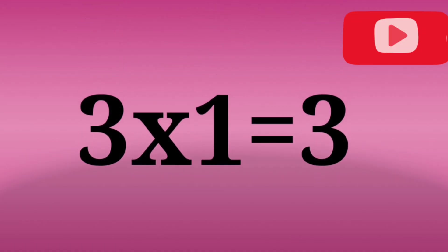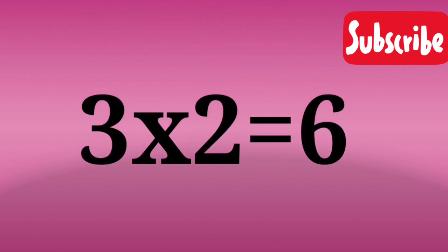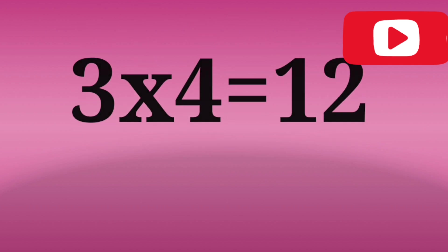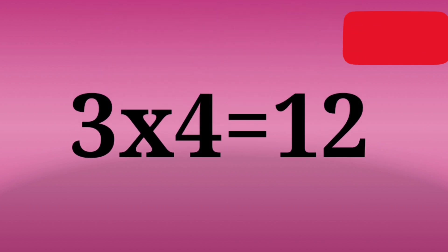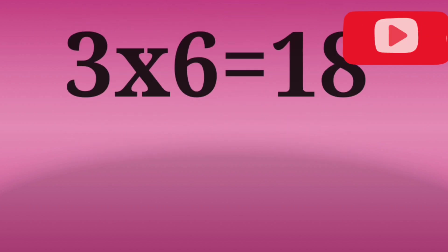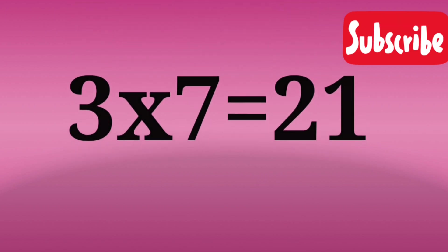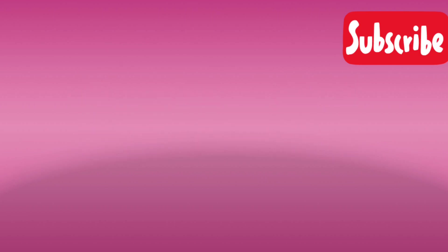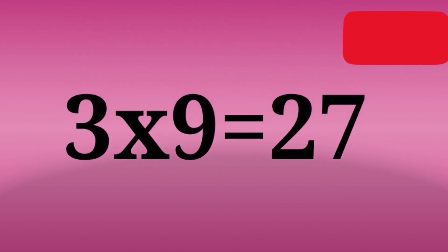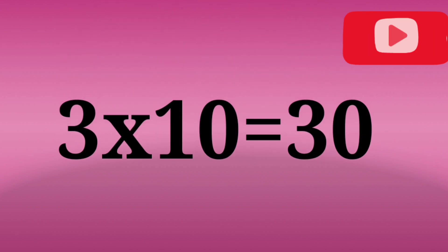3 1's are 3, 3 2's are 6, 3 3's are 9, 3 4's are 12, 3 5's are 15, 3 6's are 18, 3 7's are 21, 3 8's are 24, 3 9's are 27, 3 10's are 30.